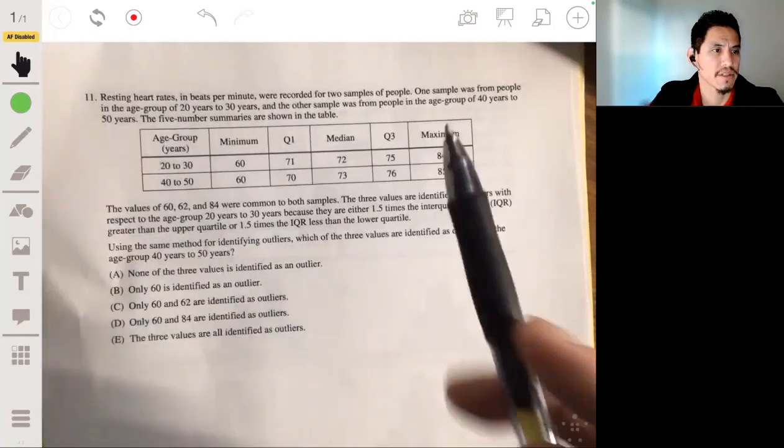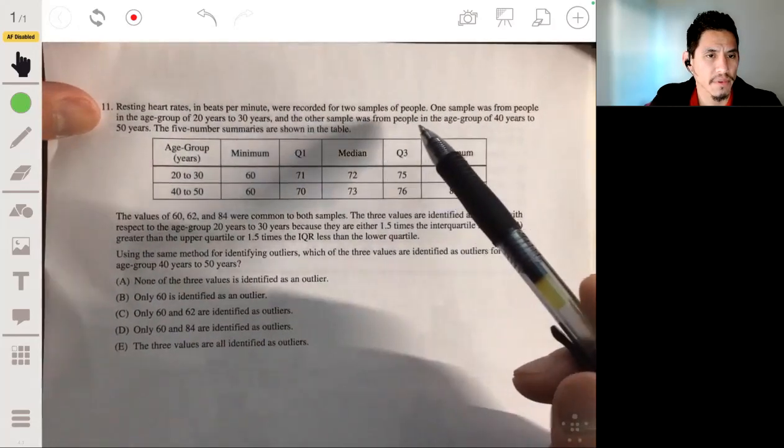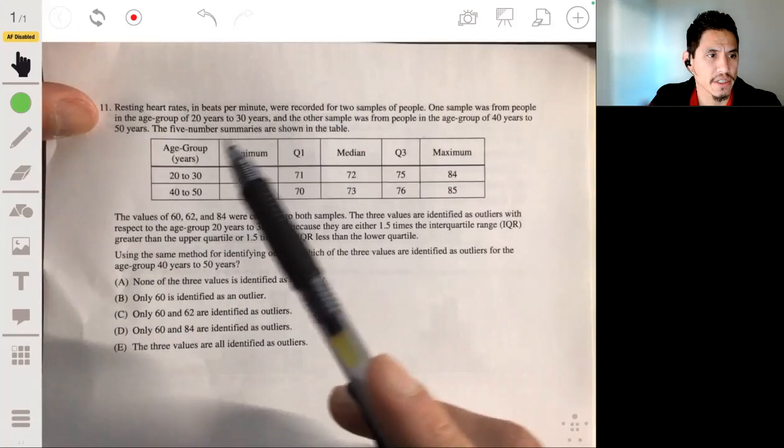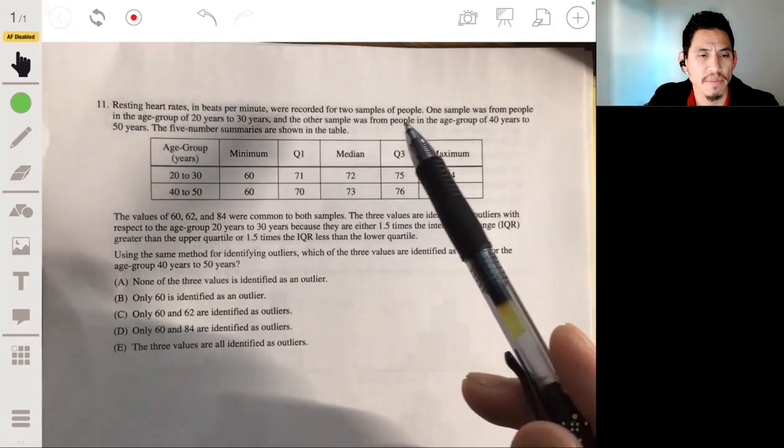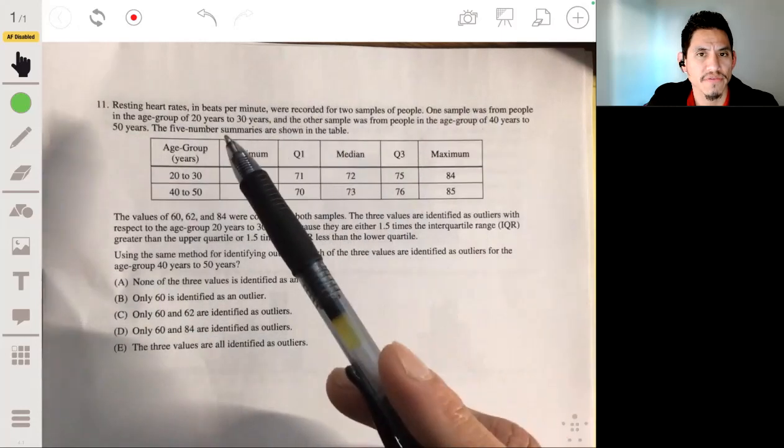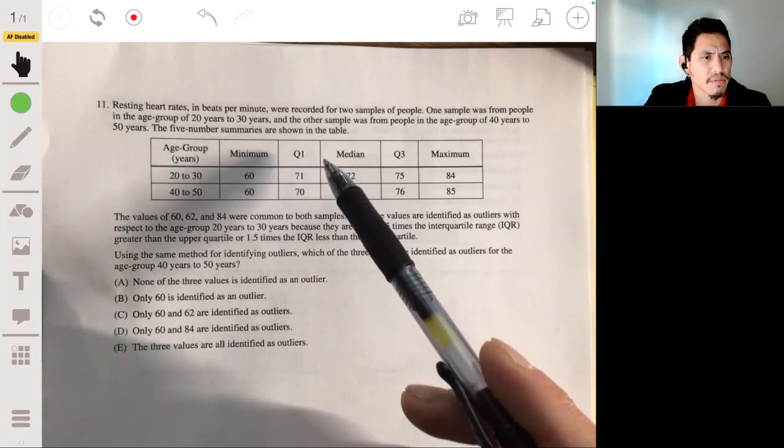Alright, problem 11. We have the resting heart rates in beats per minute. They were recorded for two samples of people. One sample was from people in the age group of 20 years to 30 years, and the other sample was from the people in the age group of 40 years to 50 years. The five number summaries are shown in this table.